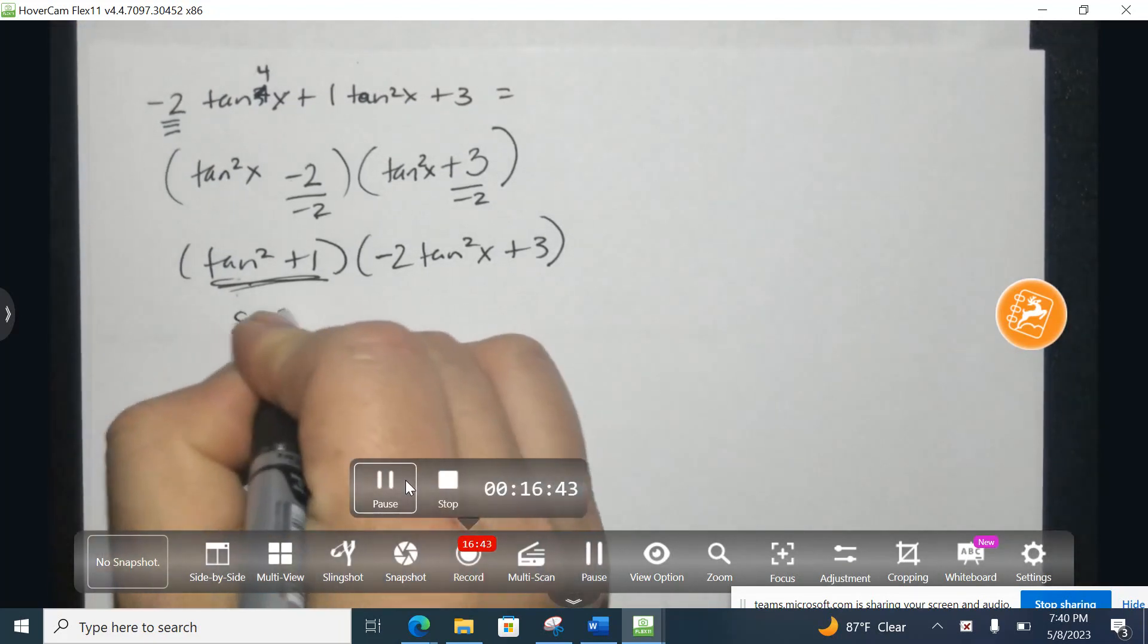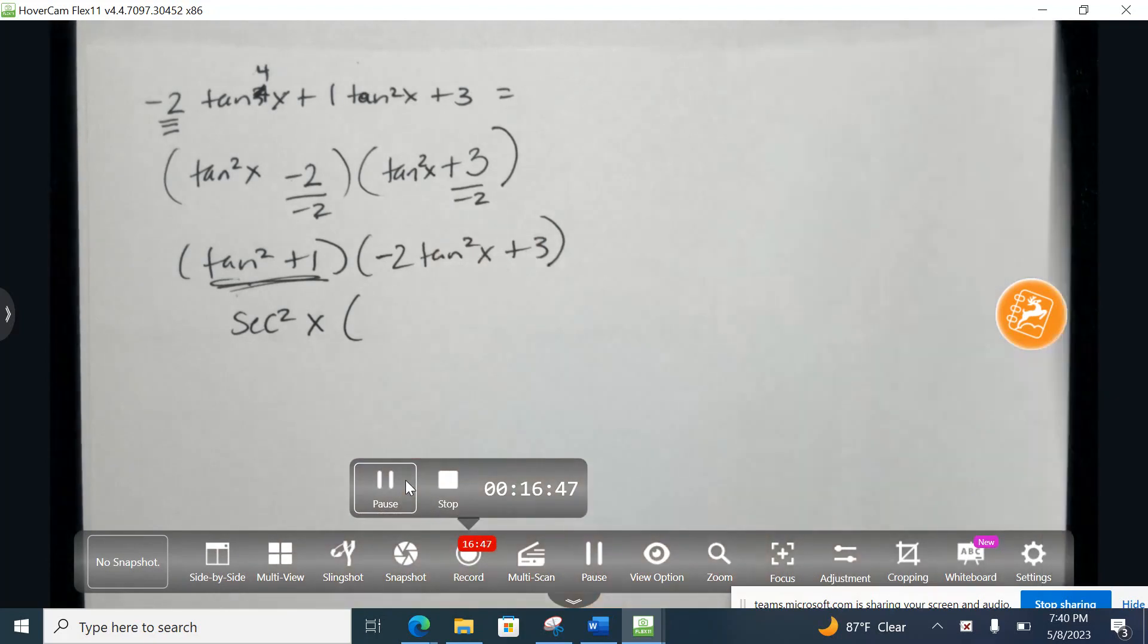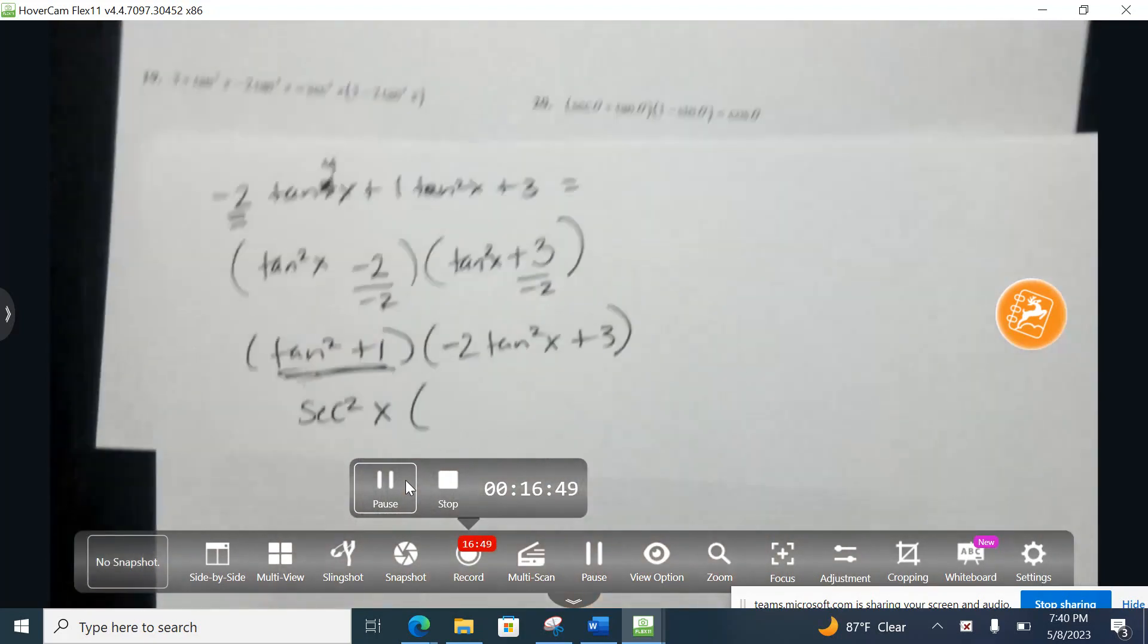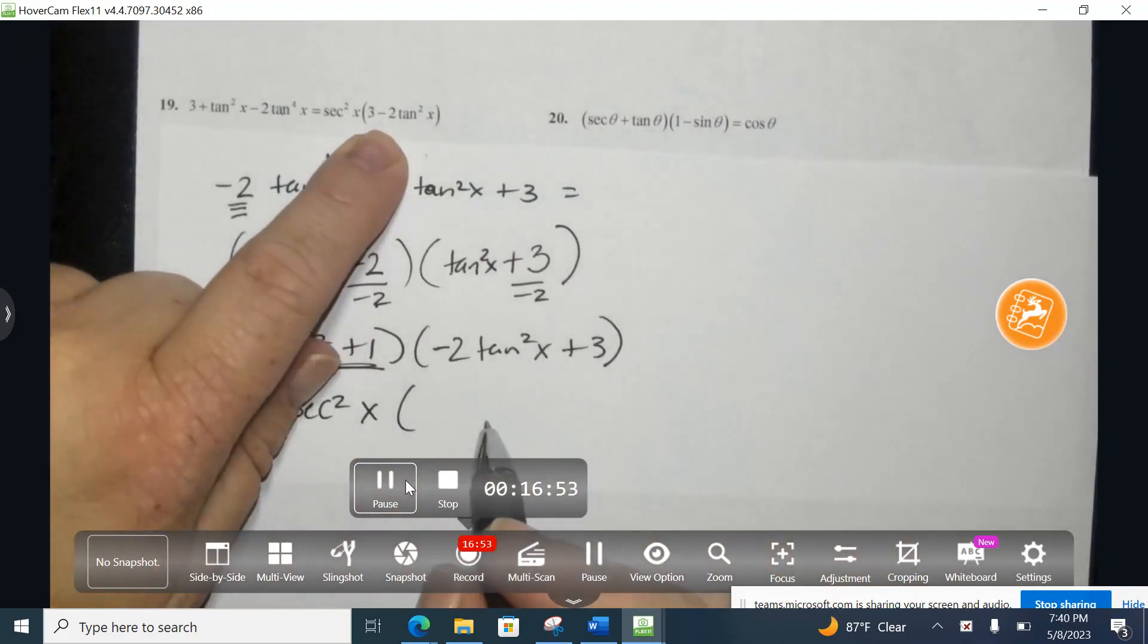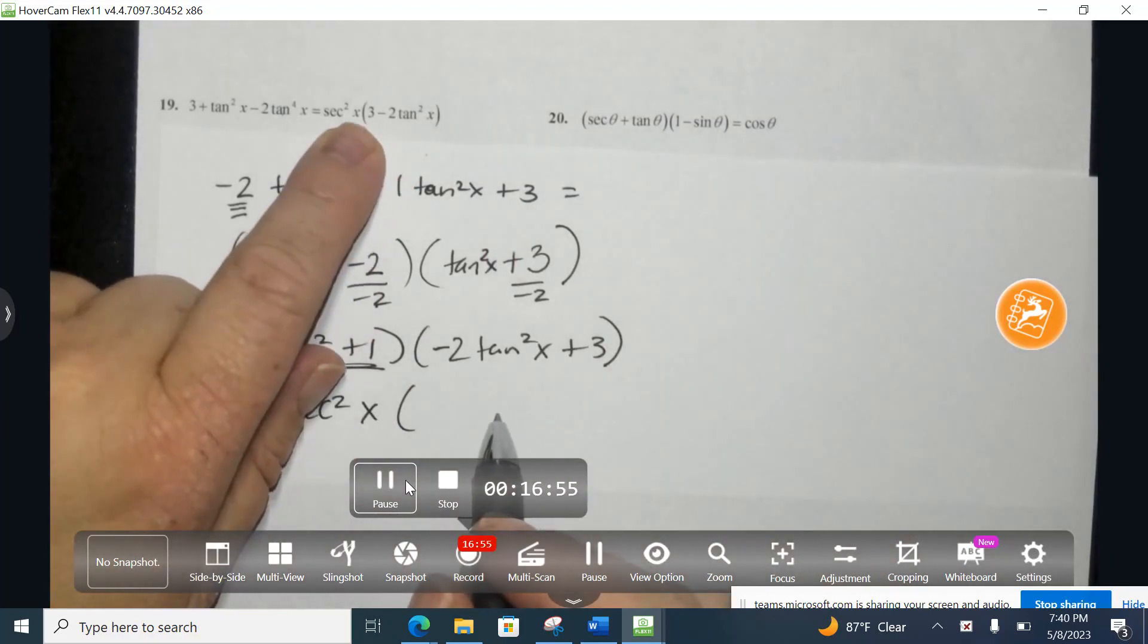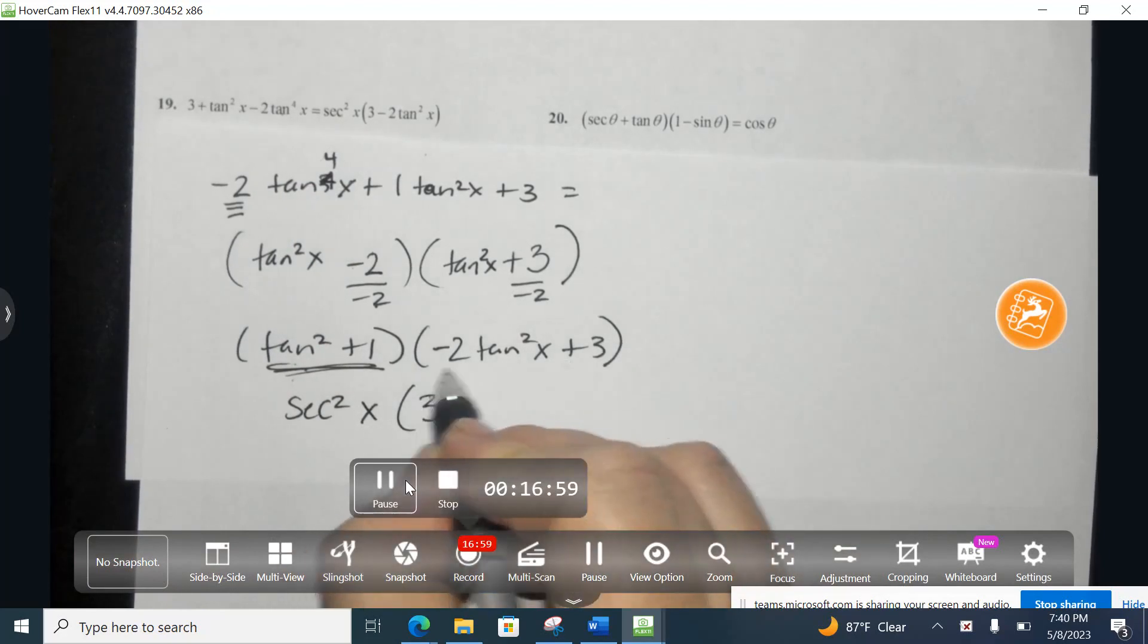So this part is secant squared x, and then I can just rewrite this, because what I want it to do is I want it to equal the left-hand side. So notice that all they did is they took this on the right-hand side, and they just put the number 3 in front. So they took this positive 3, they just put it in a different order.